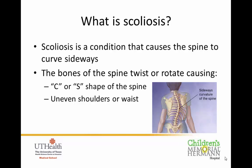What is scoliosis? Scoliosis is a condition that causes the spine to curve sideways, as you can see in the photograph below. The bones of the spine actually twist or rotate as the child grows, which causes either a C or an S shape of the spine, and visually you'll see uneven shoulders or waist as a result of this rotation.